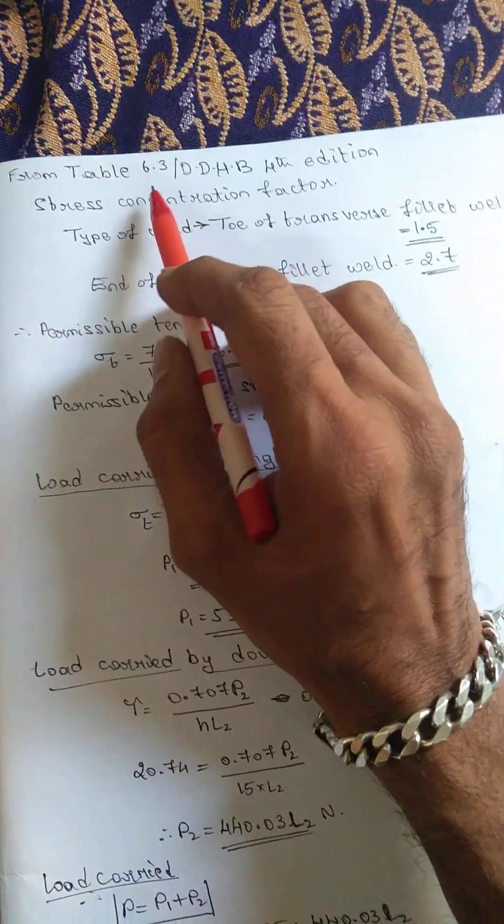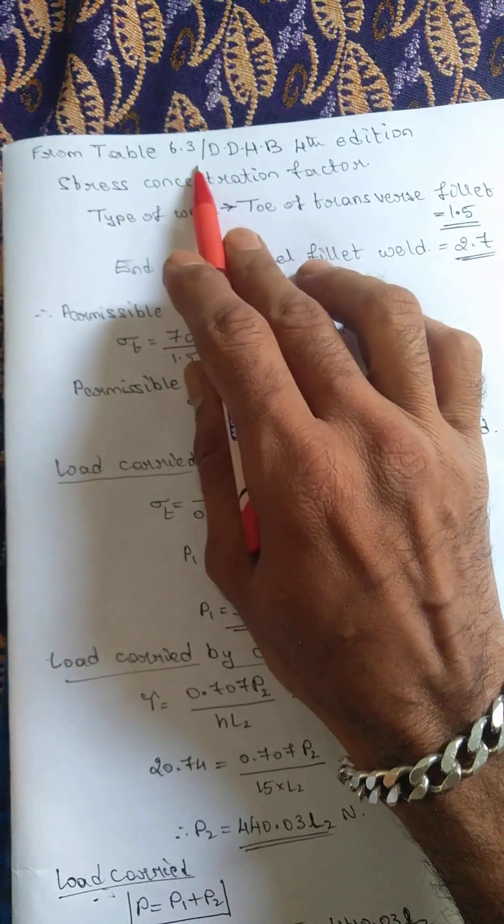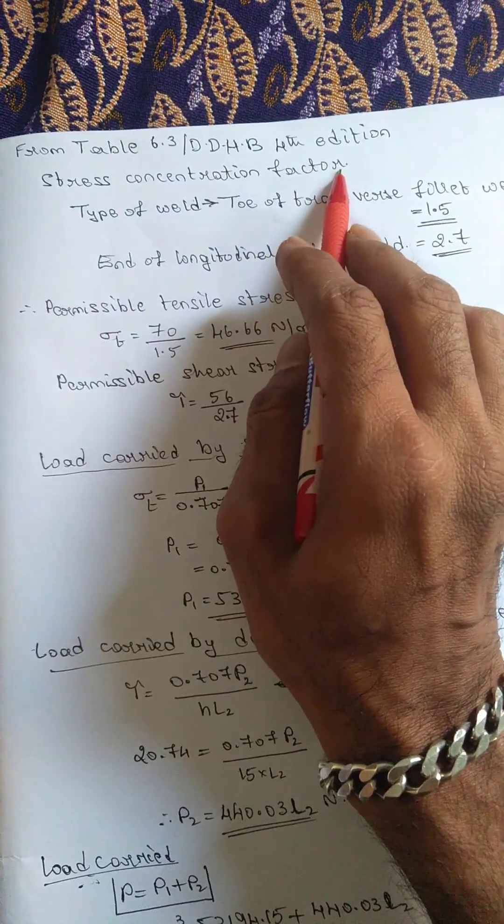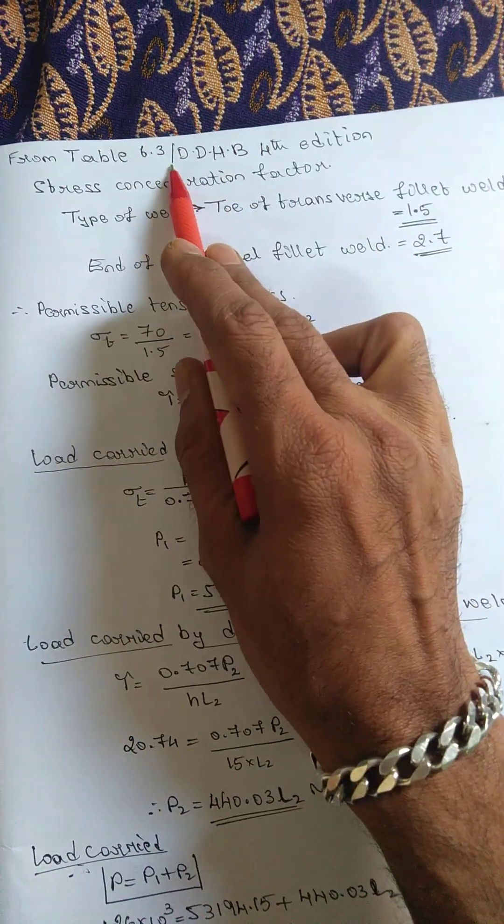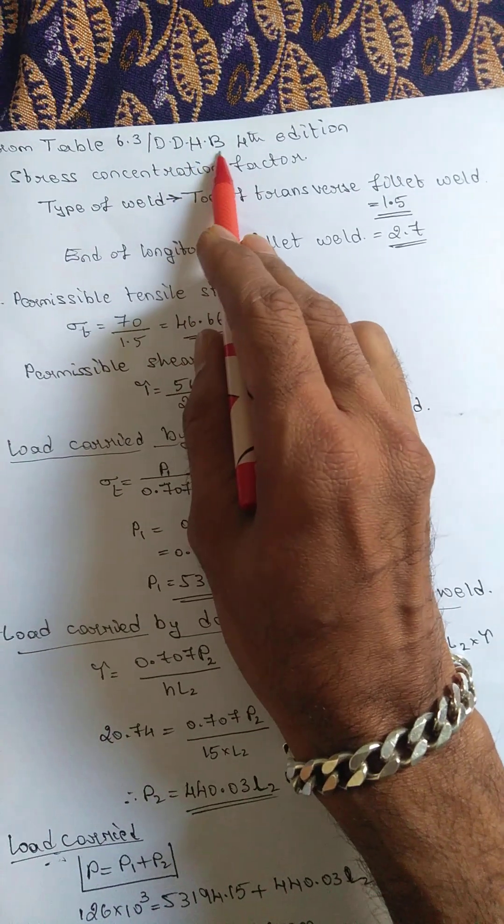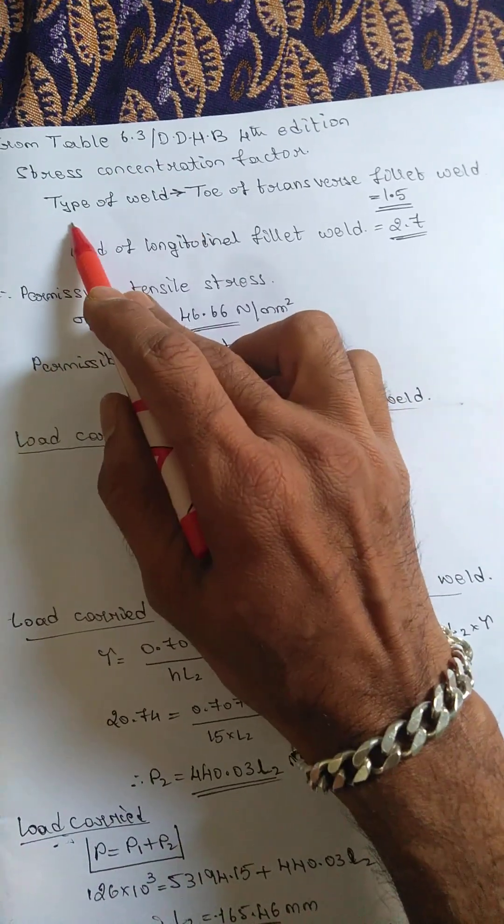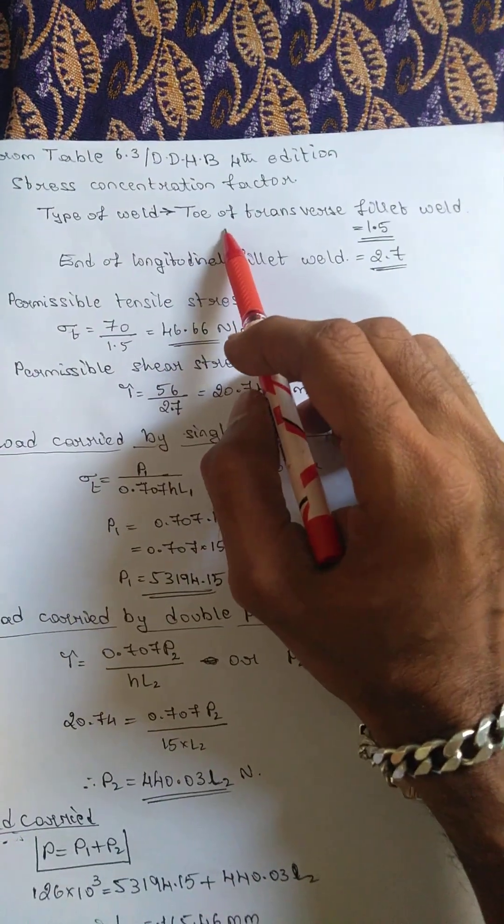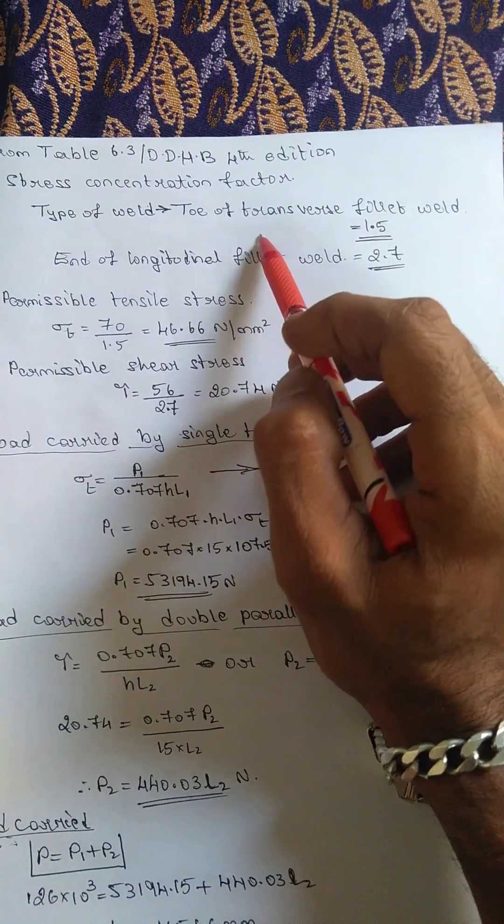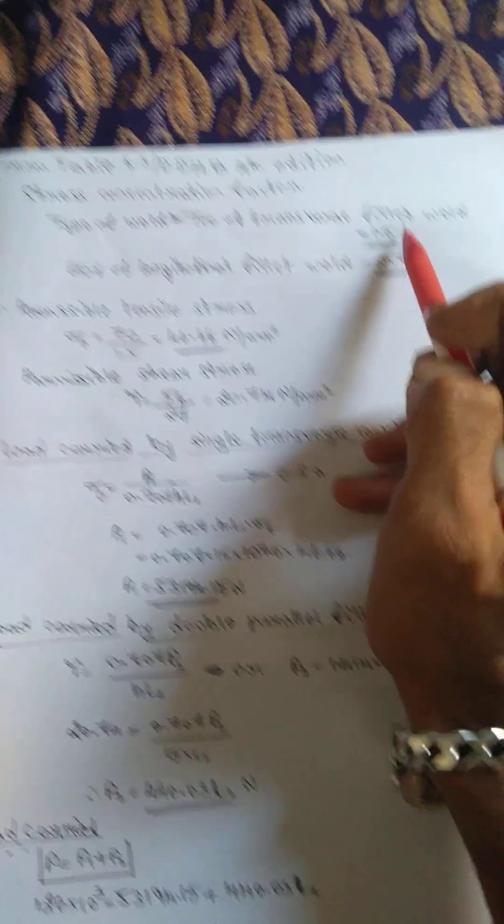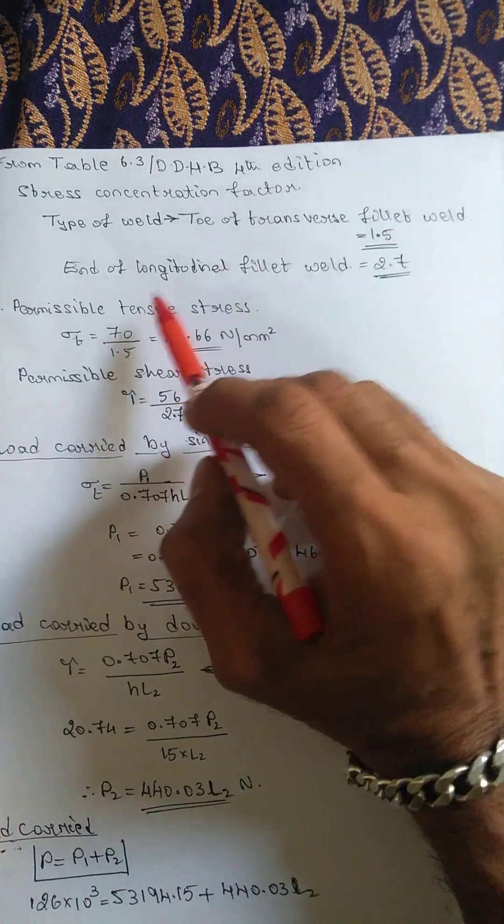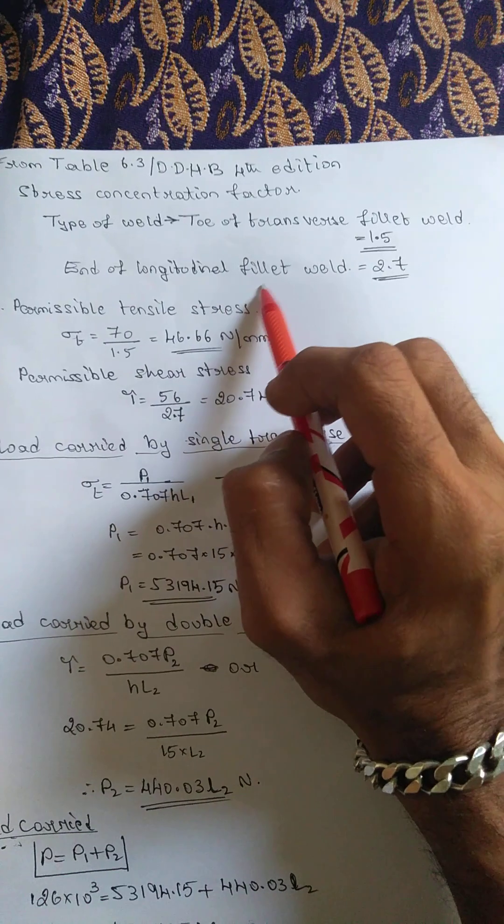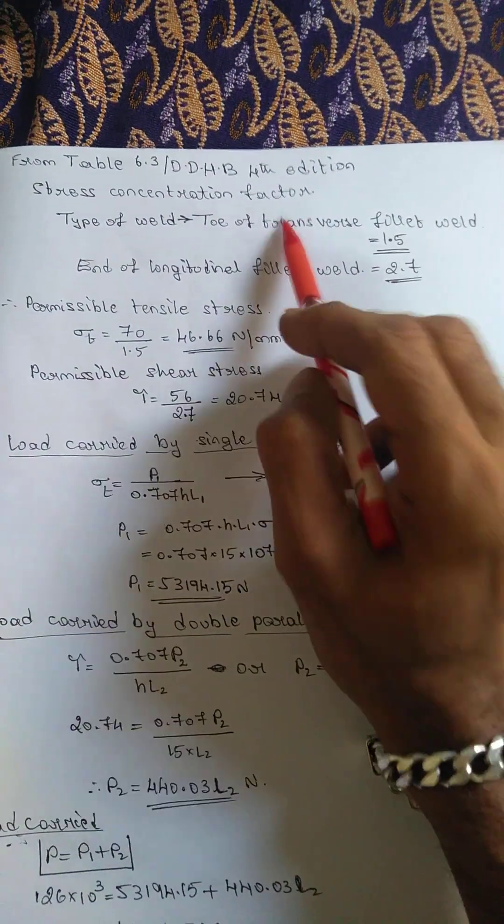If you are using design data handbook Mahadevan and Balvir Reddy, you have to check that table in order to obtain the stress concentration factor - the fourth edition, table number 6.3. Type of weld is given on a column: for transverse fillet weld, the stress concentration factor is 1.5, and end of longitudinal fillet weld, that is double parallel fillet weld, is 2.7. It is given in the data handbook.